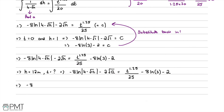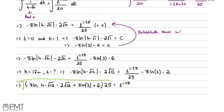Rearranging, we have -8 ln|4 - √12| - 2√12 + 8 ln 3 + 2 on the left, multiplied by 25 to give t^1.25. Taking the 1.25th root of both sides, putting this into a calculator gives t = 75.2 years to three significant figures when h = 12 metres.